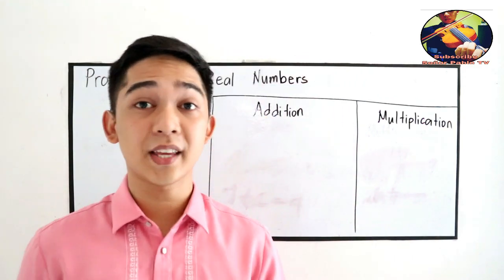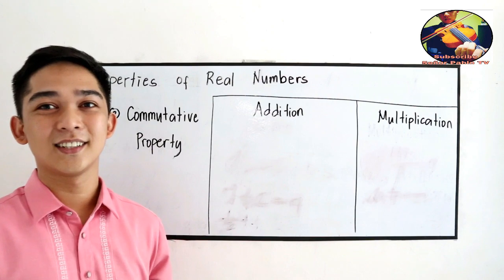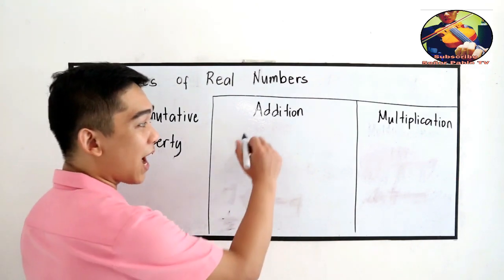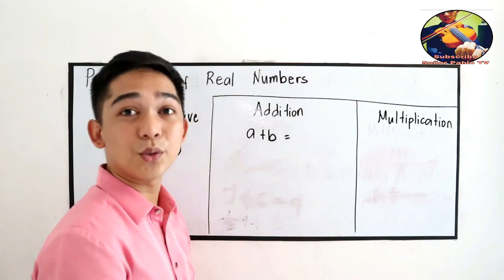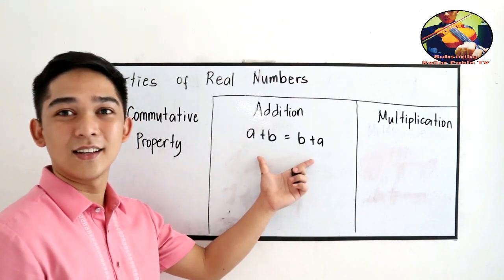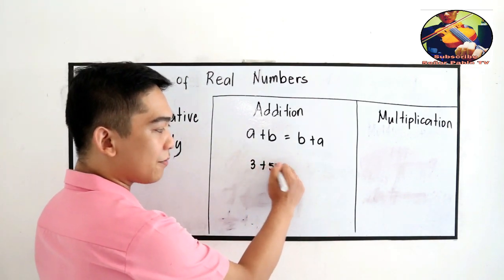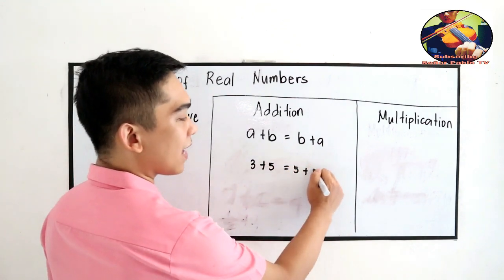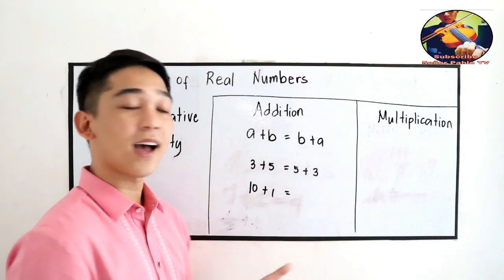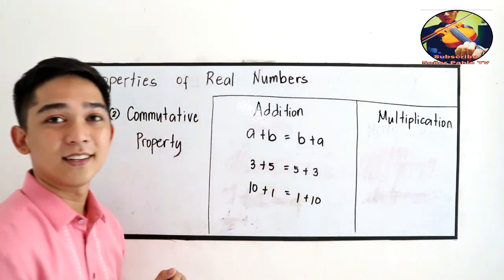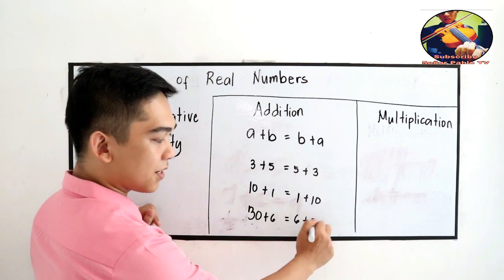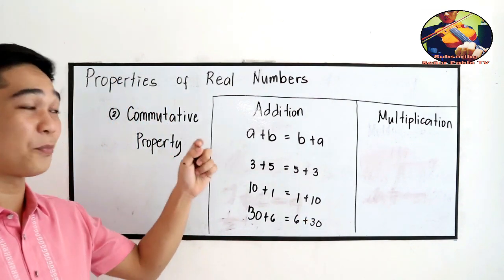Our next property is the commutative property of addition and multiplication. The commutative property of addition is the most fundamental: A plus B equals B plus A. So 3 plus 5 equals 5 plus 3, 10 plus 1 equals 1 plus 10, and 30 plus 6 equals 6 plus 30.